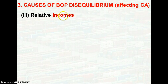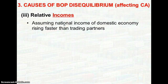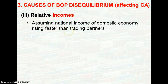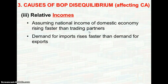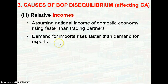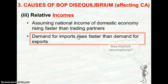The next factor is relative incomes, whereby the national income of the domestic economy is increasing faster than that of trading partners. In the domestic economy, income increases faster than the incomes of people living in other countries. Therefore, the demand for imports in our country will increase faster than the demand for exports.